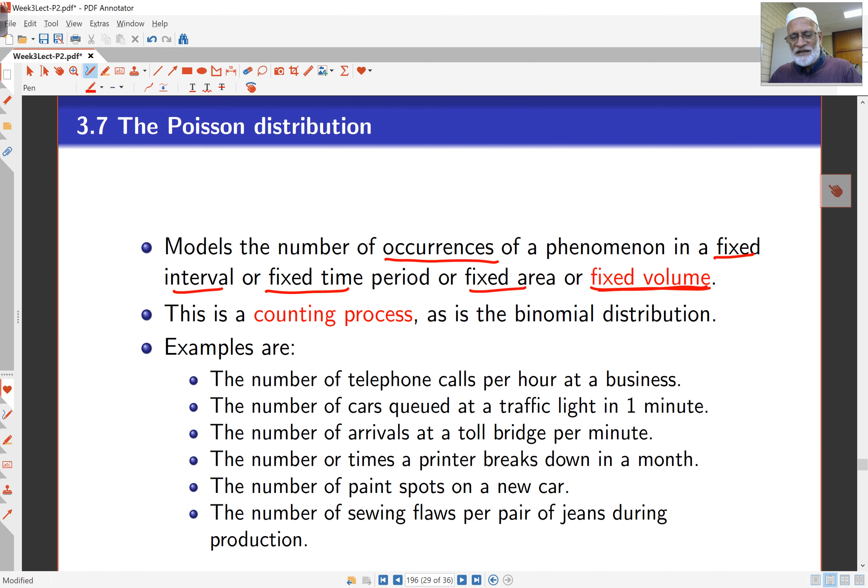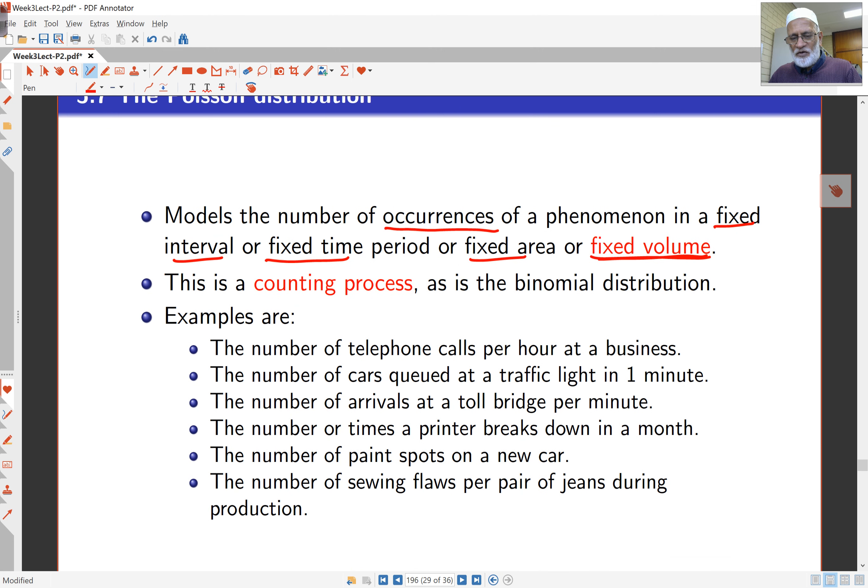So it's a counting process, the same as binomial. Some examples are the number of telephone calls per hour in a business, the number of cars queued at a traffic light in one minute. So here the volume is an hour, and here the volume is one minute. The number of arrivals at a toll bridge per minute, so volume here is one minute.